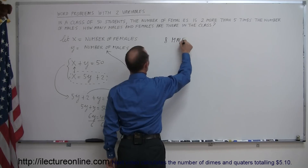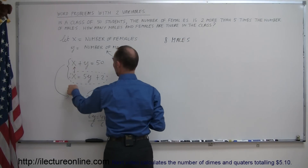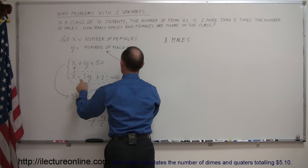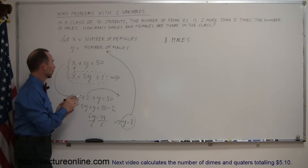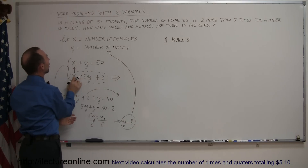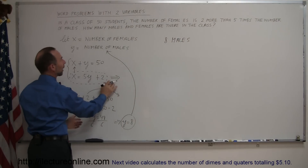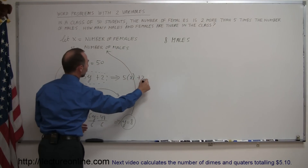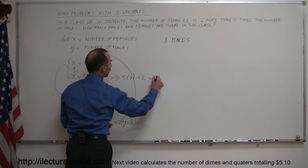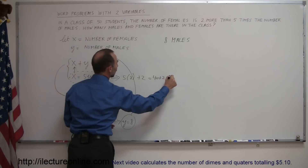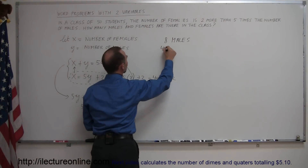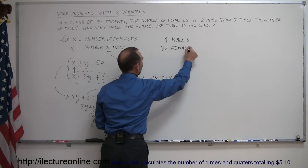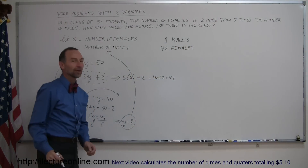Now go back to the equation for x, the number of females: x equals 5 times y plus 2. Substituting y equals 8: x equals 5 times 8 plus 2, which is 40 plus 2, which equals 42. Therefore, there are 42 females in the class.